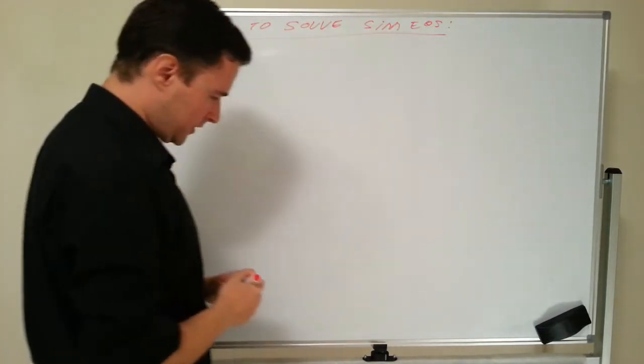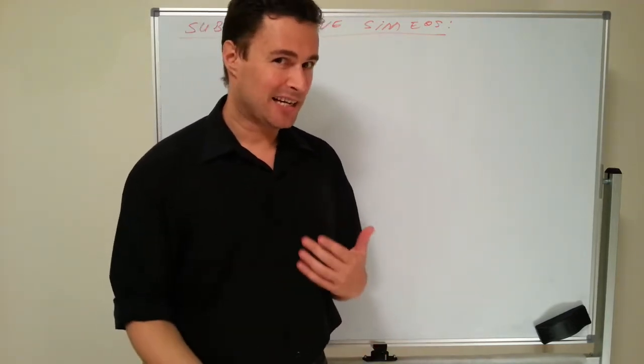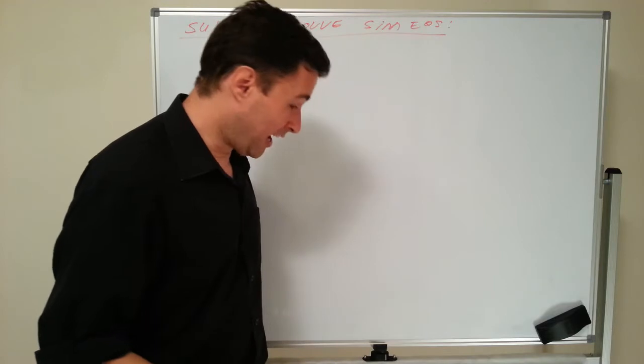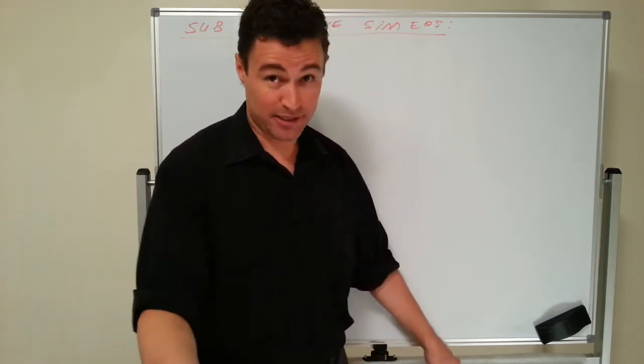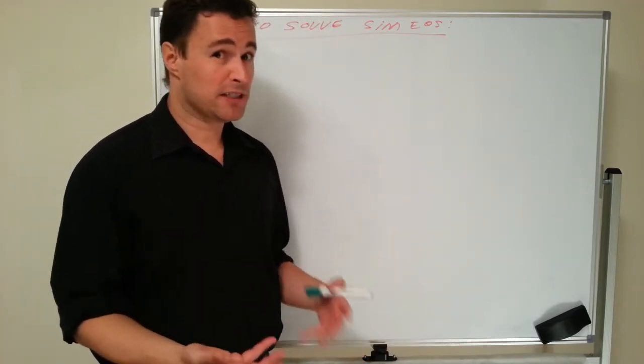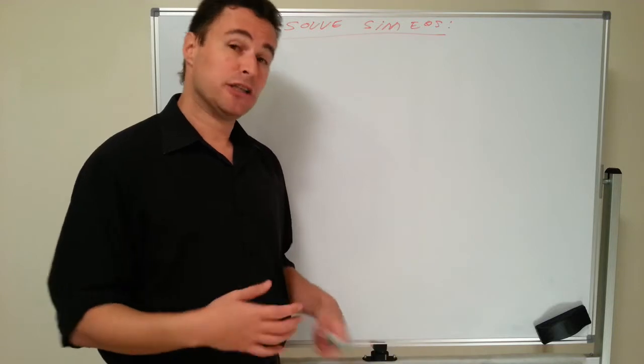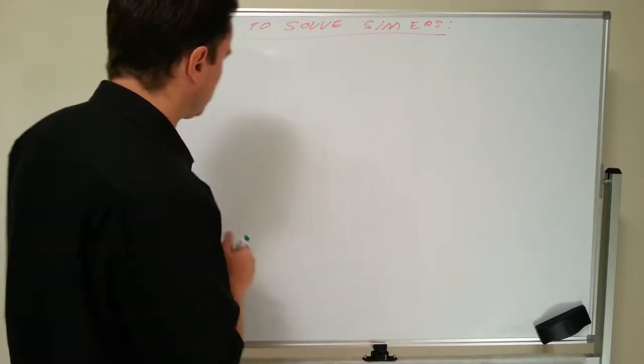I've done other videos on solving simultaneous equations, specifically by cancelling. I think cancelling is slightly easier, but to tell you the truth, I used this way the whole way through high school. I never used the cancelling way until I actually became a teacher myself. And this way is just as powerful, except you have to be quite good at algebra to be able to handle this in certain cases. Sometimes the substitution is a little bit ugly.